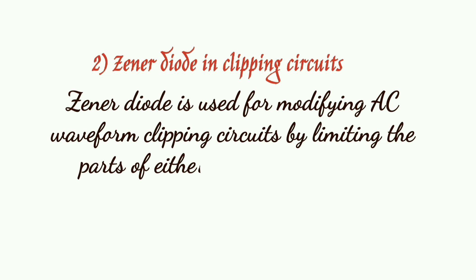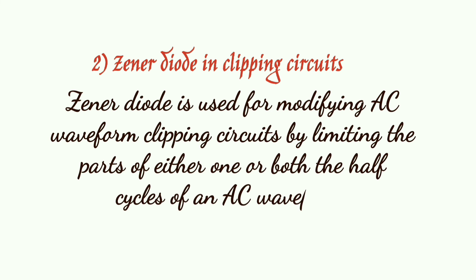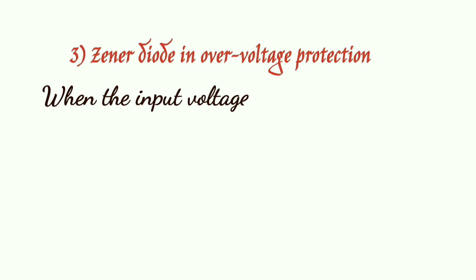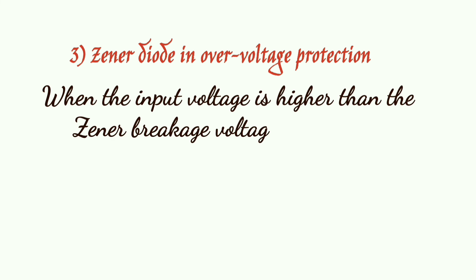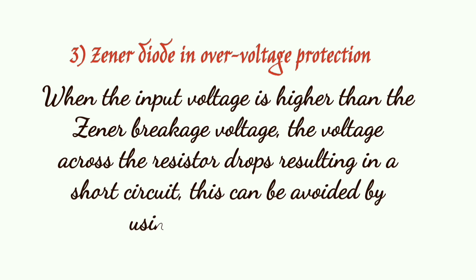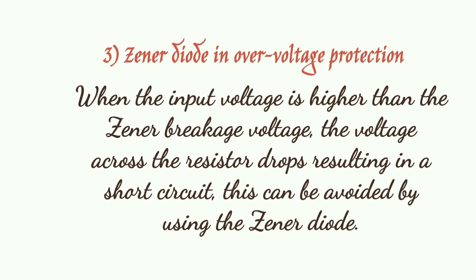The clipping circuit limits either one or both half cycles of the AC waveform. Third, the zener diode in over voltage protection — when the input voltage is higher than the zener breakdown voltage, the voltage across the resistor drops, resulting in a short circuit. This can be avoided by using the zener diode.